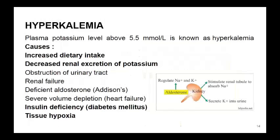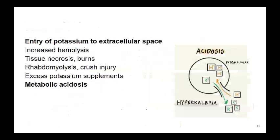The next disease state is hyperkalemia — 'hyper' means increased. A potassium level more than 5.5 millimoles per liter is known as hyperkalemia. Causes include increased dietary intake, decreased renal excretion due to obstruction of the urinary tract or renal failure, deficiency of aldosterone as in Addison's disease, severe volume depletion due to heart failure, insulin deficiency, tissue hypoxia, and entry of potassium into the extracellular space seen in increased hemolysis, tissue necrosis, burns, rhabdomyolysis, and crush injuries.